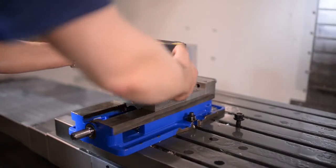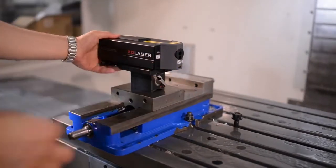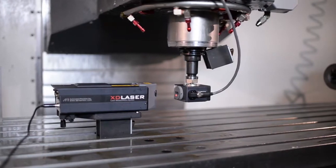Using the magnetic base, mount the XD on the bed of the machine. The sensor should be mounted into the spindle of the machine.